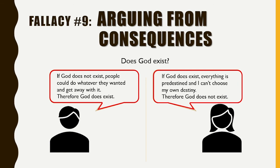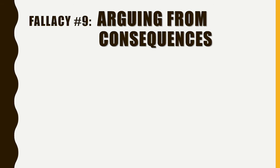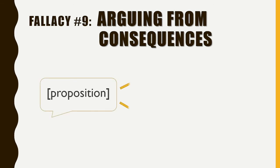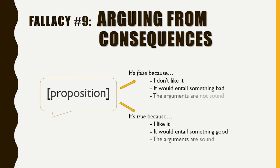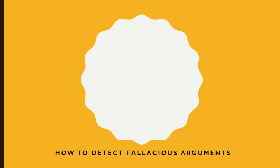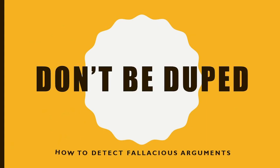Both of these examples, on either side of the argument of whether there is a God, can be summed up like this: because this fact would have bad consequences or entail other facts that I dislike, it isn't true. These could be good reasons to want or not want something to be true, but not good reasons for actually believing something is true or false. To summarize, one's determination of a proposition's truthfulness must be based on the soundness of the arguments and the quality of the evidence — not on our feelings about the consequences of the proposition. So watch out for the arguing from consequences fallacy and… Don't be duped!